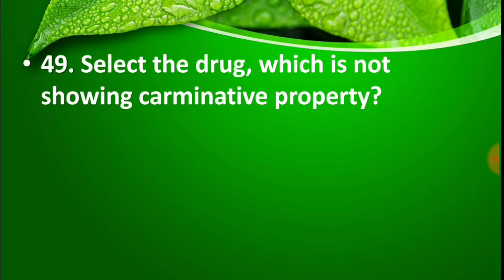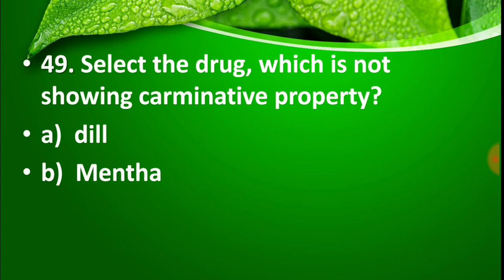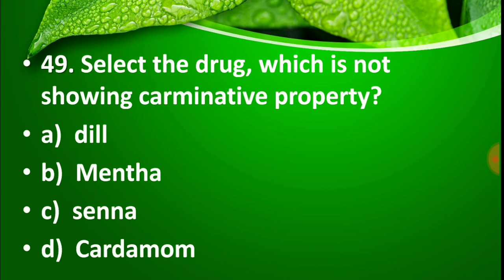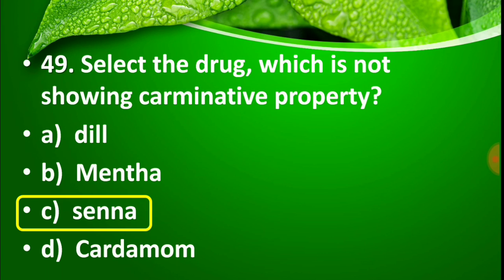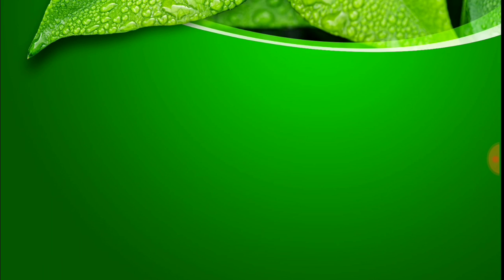Question number 49: Select the drug which does not possess carminative property. Option A: Dill, Option B: Mentha, Option C: Senna, Option D: Cardamom. The right answer is Option C, Senna. Senna is a glycoside and does not possess carminative property — it has purgative properties. While Dill, Mentha, Cardamom, and Fennel are carminative drugs.